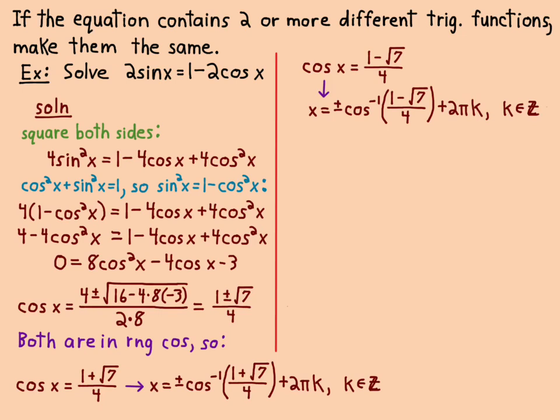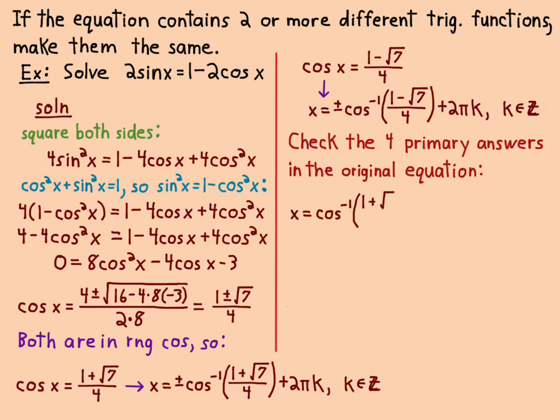It didn't say the answers have to be within a certain interval, so they just want all of the answers. You need to check the four primary answers to see if they actually work in the original equation. This is critical. I took x = cos⁻¹((1 + √7)/4) and put it in the original equation to see if the left side equals the right side. Then I took the minus version of it.